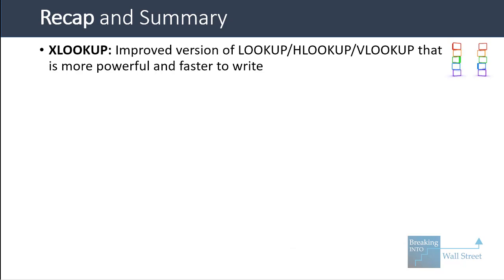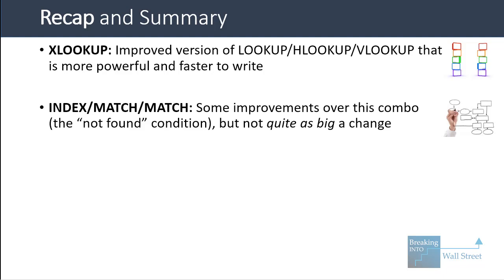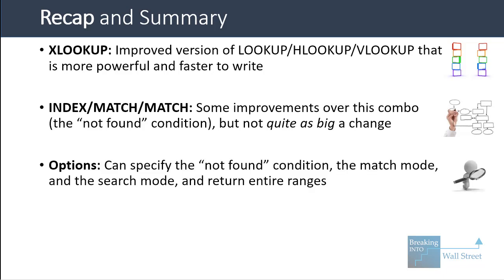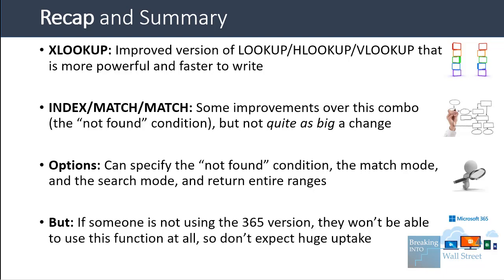Let's do a recap and summary. XLOOKUP is an improved version of LOOKUP, HLOOKUP, and VLOOKUP — more powerful, faster, and shorter to write. It also improves upon INDEX MATCH MATCH, with benefits like specifying a not-found condition, match mode, and search mode, and returning entire ranges. However, it's not as big a change over INDEX MATCH MATCH as it is over VLOOKUP and HLOOKUP. If someone isn't on Excel 365, they can't use this at all, so expect gradual adoption over the next five to ten years rather than immediate widespread use.